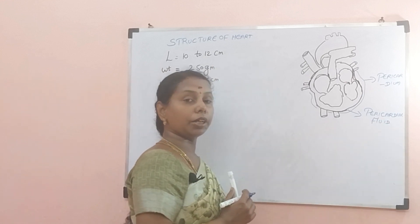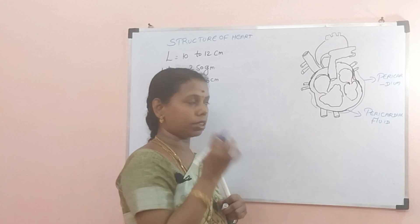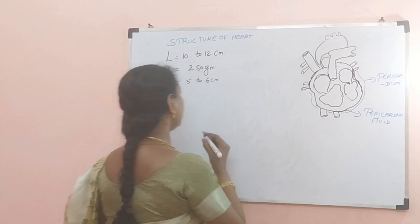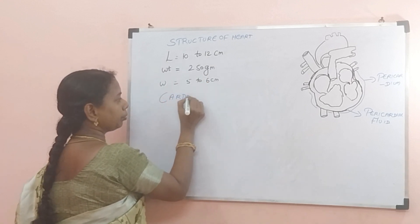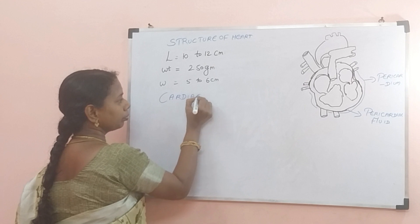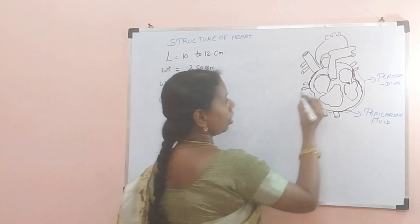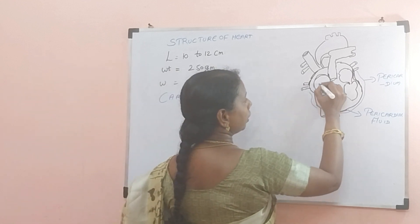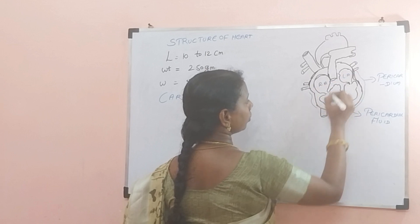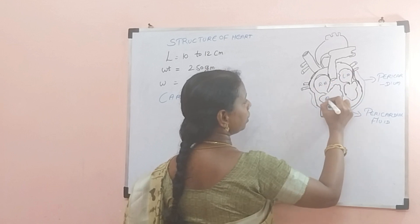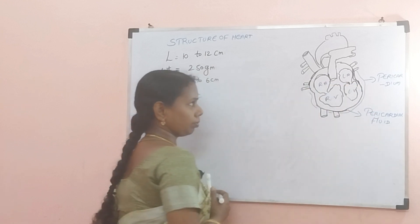Our heart is a myogenic heart. It is made of muscle — specifically cardiac muscle. We can find four chambers: right auricle, left auricle, right ventricle, and left ventricle.